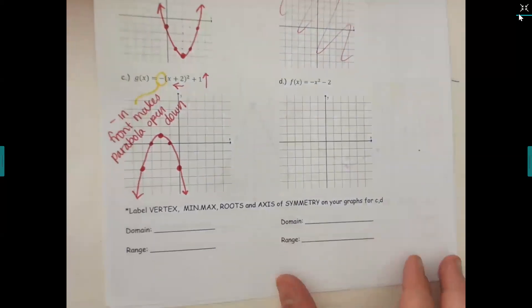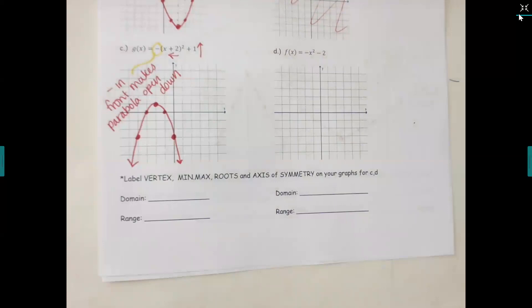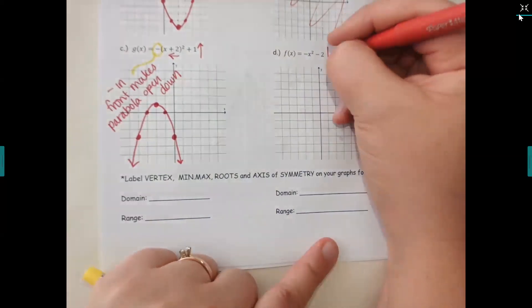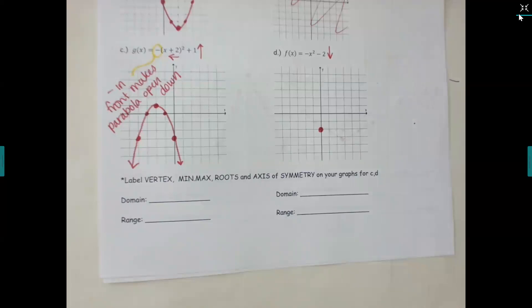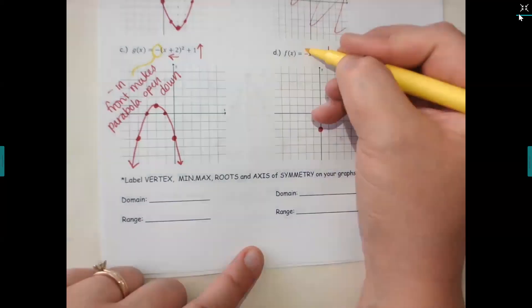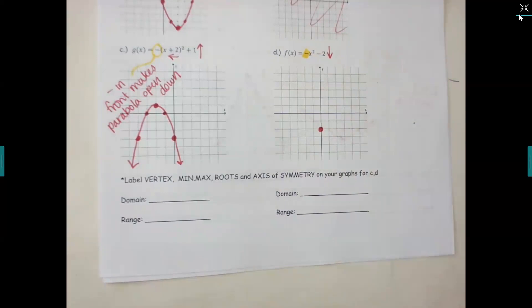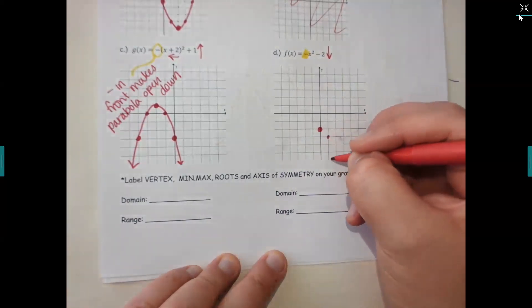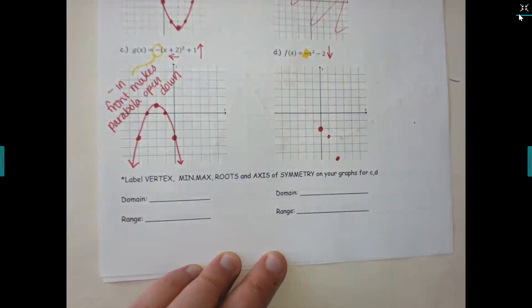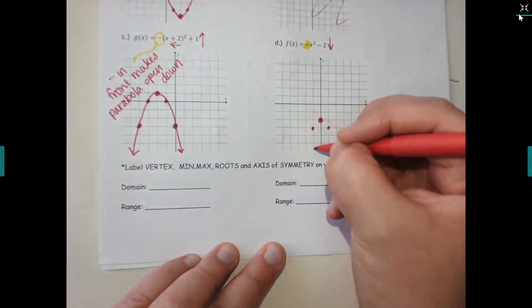One more example — take a look at d. Which way will I shift two boxes if it's a minus two? Down. How do I know it's not to the right? Because it's not inside parentheses. So go down two. Will this one open up or down? Down — because there's a negative in front. So instead of going up one-one, three-one, go down one over one, down three over one, then the same on the other side.